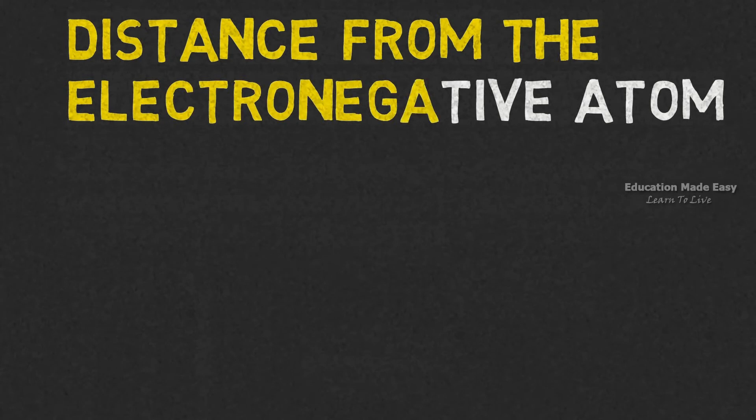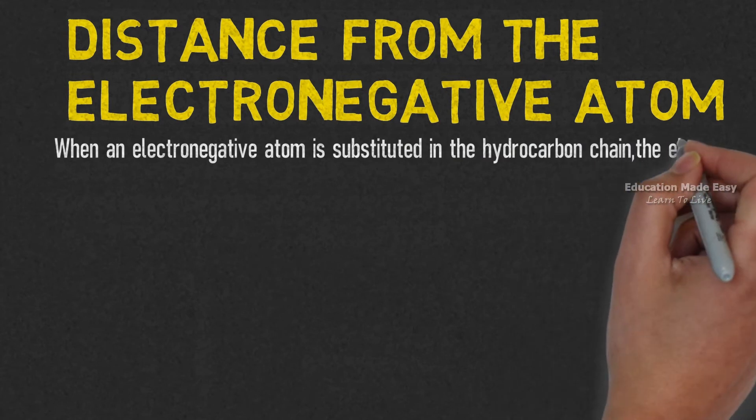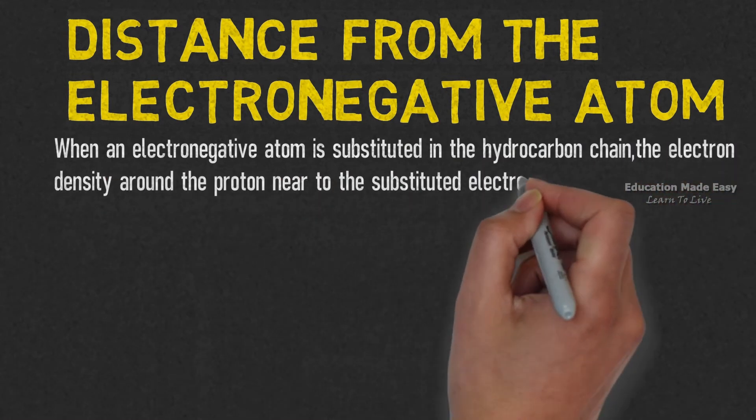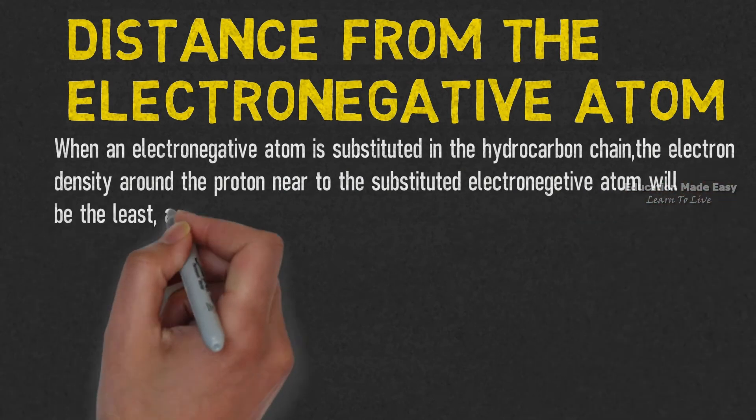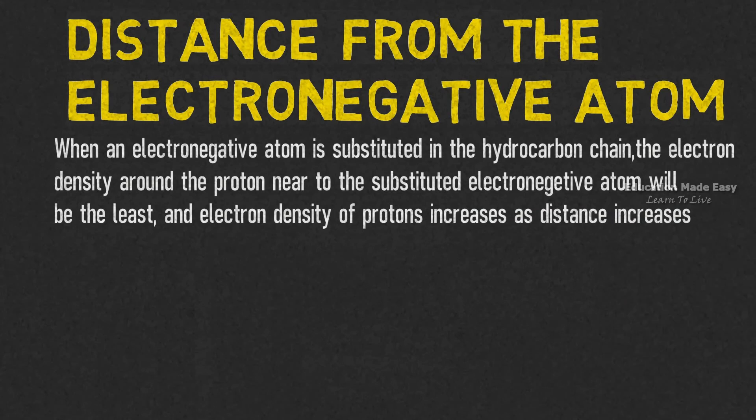Let's discuss distance from the electronegative atom. When an electronegative atom is substituted in the hydrocarbon chain, the electron density around the proton near to the substituted electronegative atom will be the least. And electron density of proton increases as distance increases.